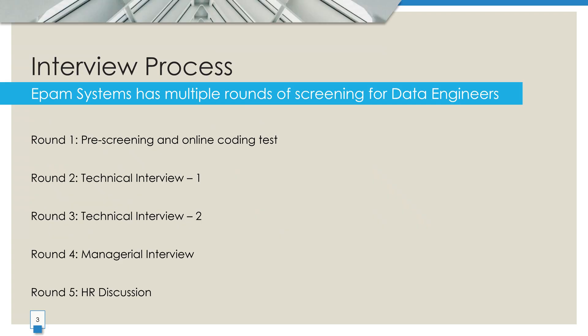The first step in the interview process is the pre-screening and online coding test. In this round, a recruiter will usually reach out to you through LinkedIn or job portals. Their role is to quickly assess your skills and overall suitability for the position. If they feel you are a good match, they will share a link to an online coding test. This test typically includes a mix of theoretical questions and coding tasks in Apache Spark.